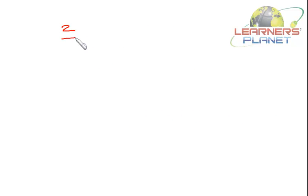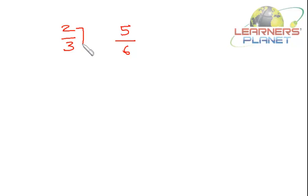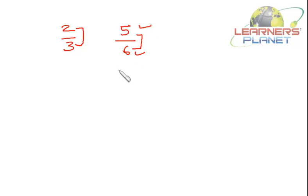Let's take one problem. Suppose I'm having 2/3 and 5/6. Now the very first step — if the fractions have smaller numbers, just see the difference between numerator and denominator. Here the difference between numerator and denominator is 1. Here also the difference is 1. So if the difference between numerator and denominator is the same, the fraction with the higher numerator or higher denominator will be bigger.